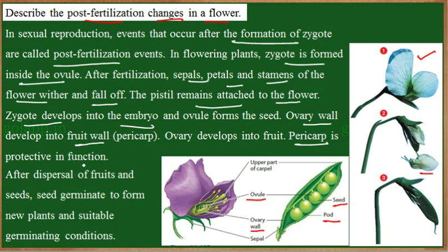The pericarp is protective in function. After the dispersal of the fruits and seeds, the seeds germinate to form a new plant under suitable conditions. Once the fruit bursts, the seeds are released, and if the environmental conditions are favorable, the seed germinates and gives rise to a new plant.